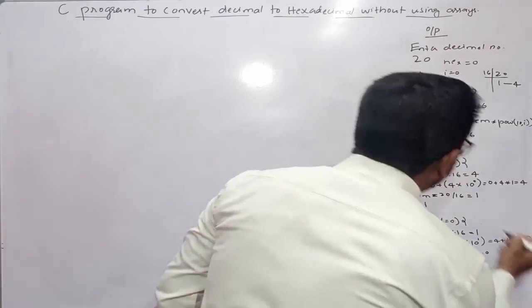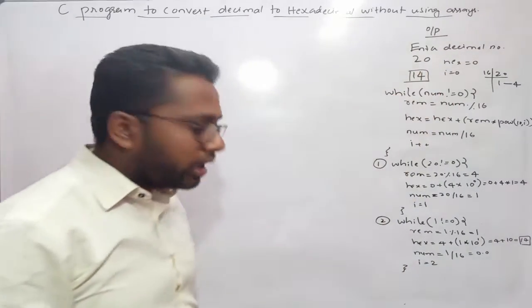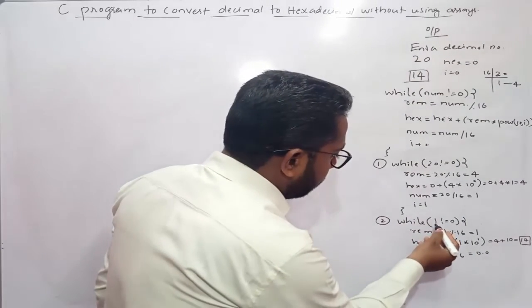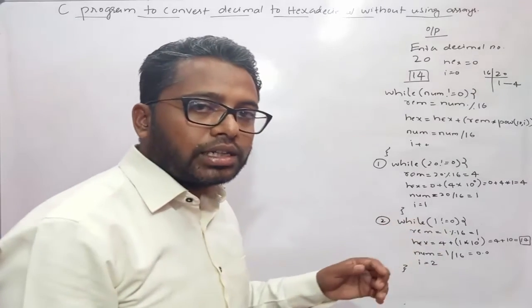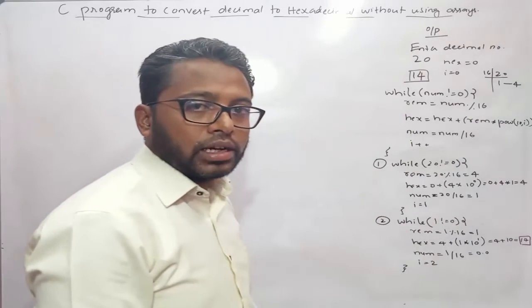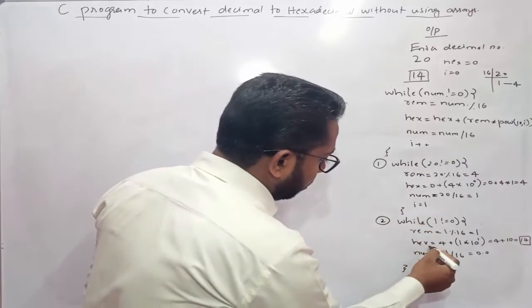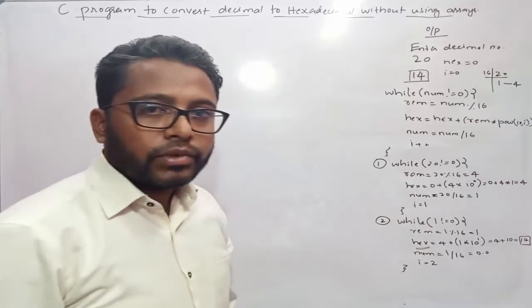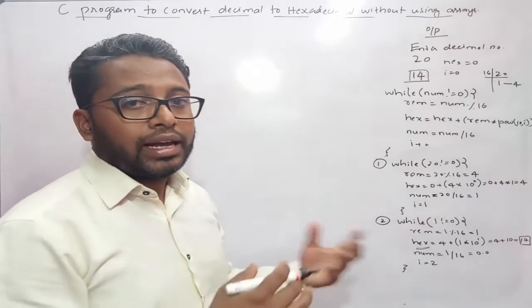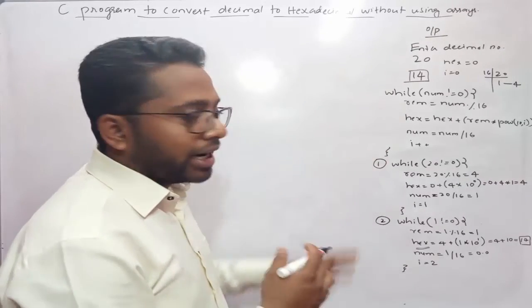As you can see, this 14 is your answer. When num becomes 0, this 0 will get passed to while where this while condition gets evaluated. 0 is not equal to 0, condition becomes false, and control comes outside the while loop to print the value of hex. This is how we convert any decimal value into hexadecimal equivalent. Now I will use this logic to write a C program.